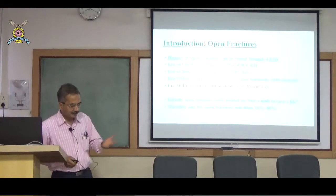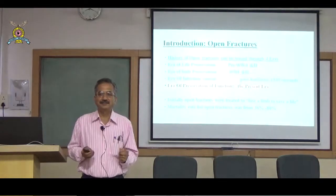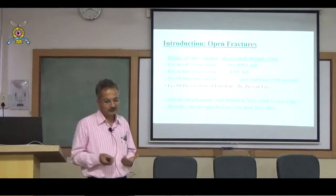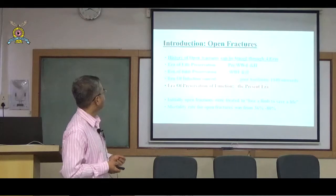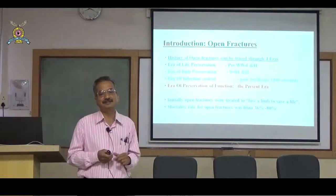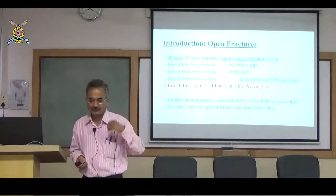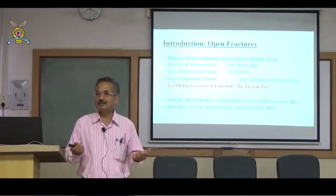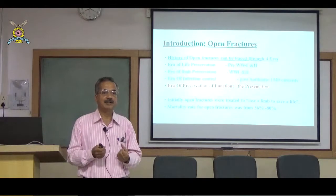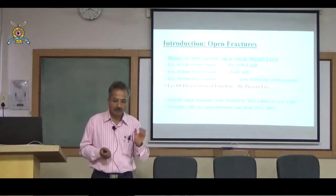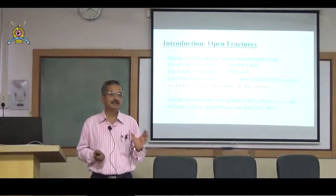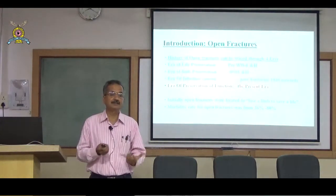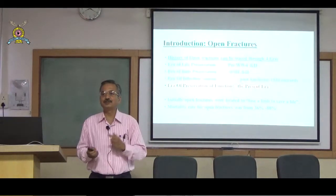One needs to understand the four eras of management and how it has evolved over time. In the era of life preservation — during the Prussian and Crimean Wars — mortality from compound femur fractures was 80%, tibial fractures 36%, and forearm fractures around 60%. The primary goal then was just to save the patient's life.